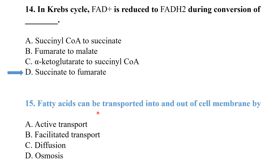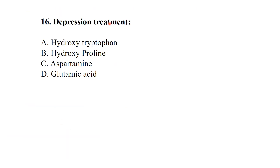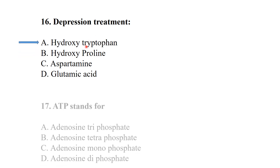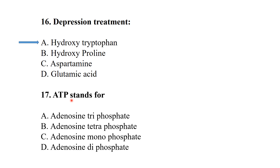FADH2 can be transported into and out of the cell membrane by transport of fatty acids — the best answer is from the digestion and transport of fatty acids chapter. For depression treatment, 5-hydroxytryptophan is the best answer. ATP stands for adenosine triphosphate — a very simple question from general metabolism.